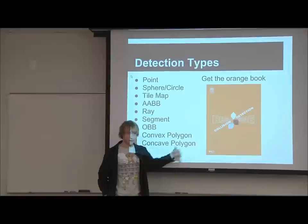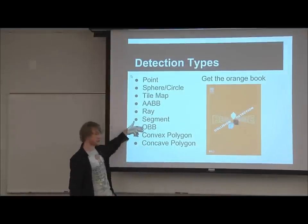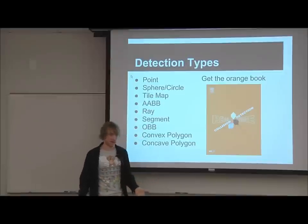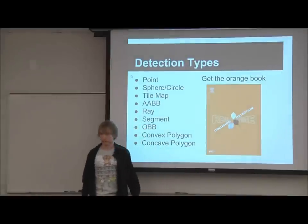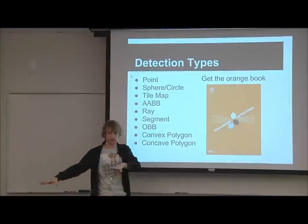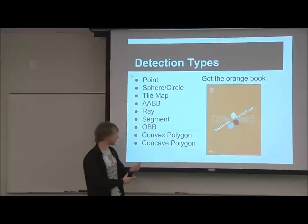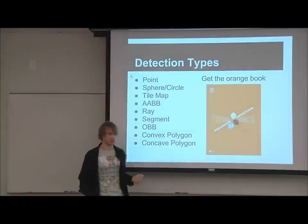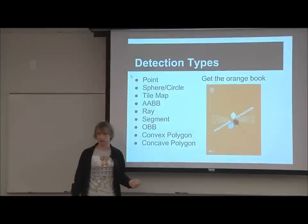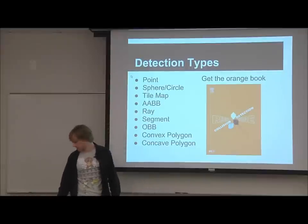I'm not going to cover primitive-versus-primitive checks like circle versus OBB because that's a lot of math and I don't have time. It's all in the book 'Real-Time Collision Detection' — there's a whole chapter covering almost every primitive against every other one, with optimized and well-explained math. These algorithms are also strangely difficult to find on the internet, and what you do find probably won't be well-optimized or may be subtly wrong. So save yourself the trouble and get the book if you're doing physics.